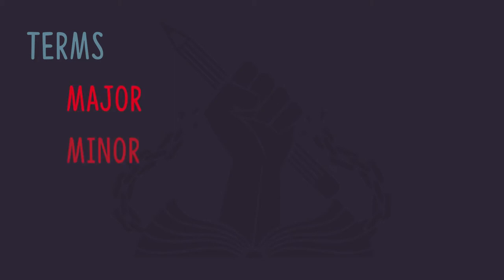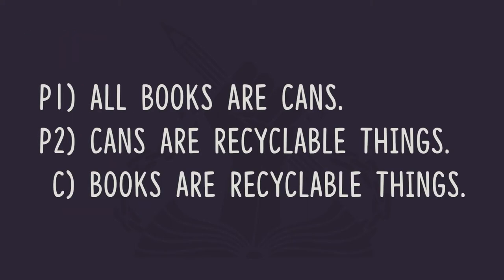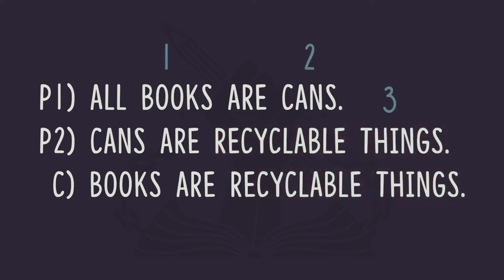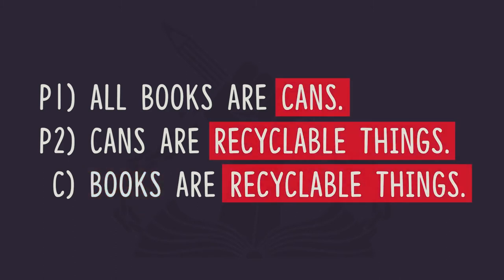But in order to engage categorical syllogisms we're going to need a broader language and more terms to help us conceptualize what's going on. So first let's talk about some terms of the categorical syllogism, particularly the major, minor, and middle terms. Let's look at an example. Here you see this three-line argument dealing with categories: books, cans, things that are recyclable. Notice we have three terms, and each statement has varying subject and predicate terms. In premise one the subject is books; in premise two it's cans; in the conclusion we're back to books.